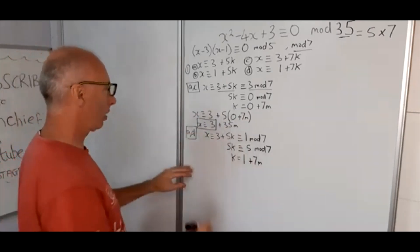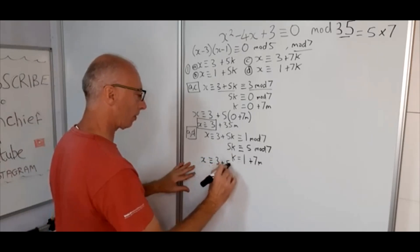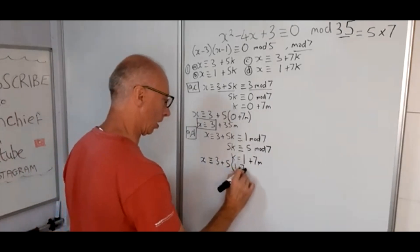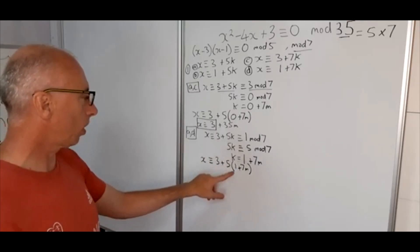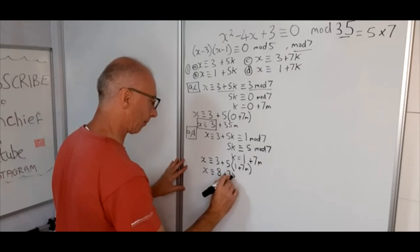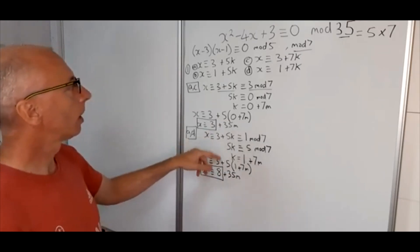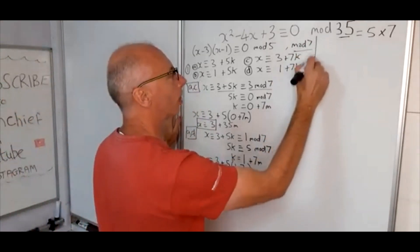So now going back to this first bit, we've got x is congruent to 3 plus 5 times k, or k is 1 plus 7m. So now x is congruent to 8 plus 35m, and that's the bit there that we're interested in. So now we've got an 8 and we've got a 3. So now let's work out, starting with the B. So equation B and that's going with equation C. Let's just box this in here.